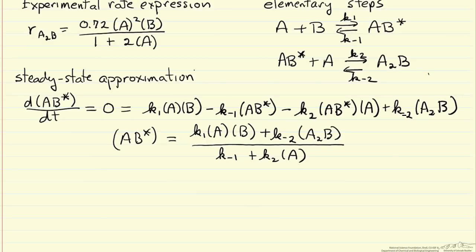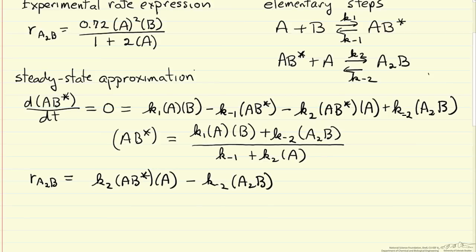Then we want to get the rate that we form A₂B, because this is what we measure. That's the rate of the second reaction: K2 times the concentration of the reactive intermediate times the concentration of A is the rate that we're forming it, and the reverse reaction means we're using it up. This is the net rate that we're making A₂B. What we want to do is substitute the expression for [AB*] in and then do the simplification to get a rate expression.